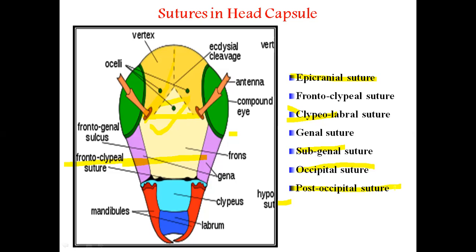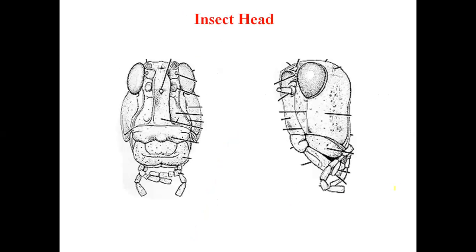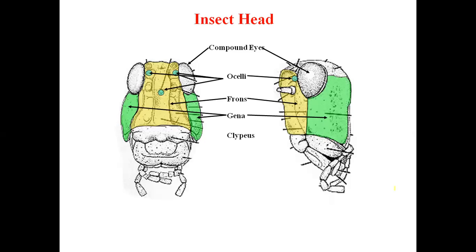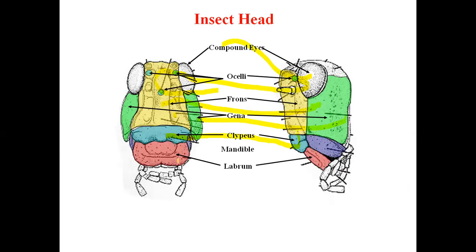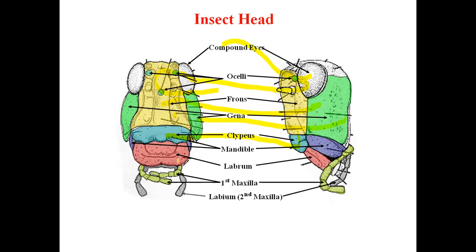This covers the overall sclerites and sutures of the insect head capsule, which are very important from an exam point of view. On the insect head diagram we can see: compound eyes, ocelli (three simple eyes), the frontal area, the gena (lateral side), the clypeus (broad plate-like structure attached to the frons), the labrum (upper lip), mandibles (two jaws), and maxillae (the second pair of jaws).